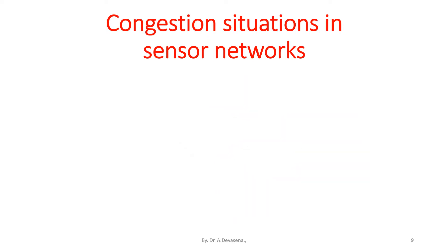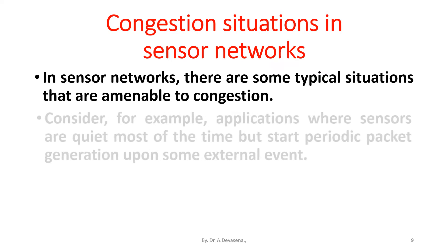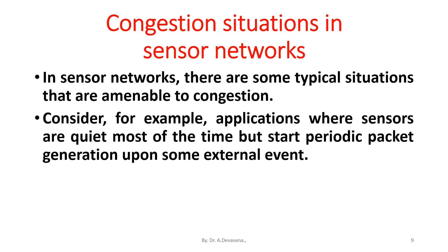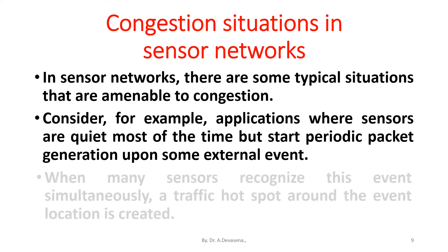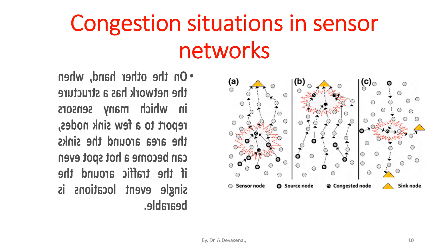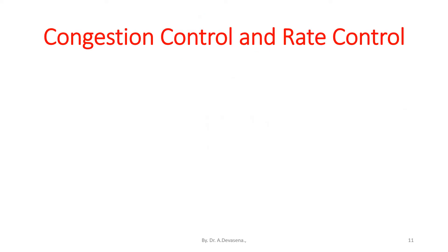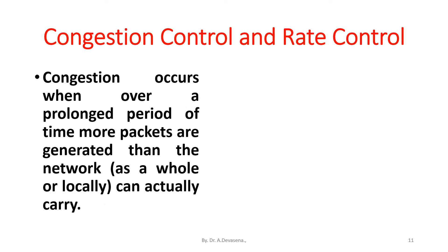Congestion situations in sensor networks. In sensor networks, there are some typical situations that are amenable to congestion. Consider applications where sensors are quiet most of the time but start periodic packet generation upon some external event. When many sensors recognize this event simultaneously, a traffic hotspot around the event location is created. On the other hand, when many sensors report to a few sink nodes, the area around the sinks can become a hotspot even if traffic around single event locations is bearable.